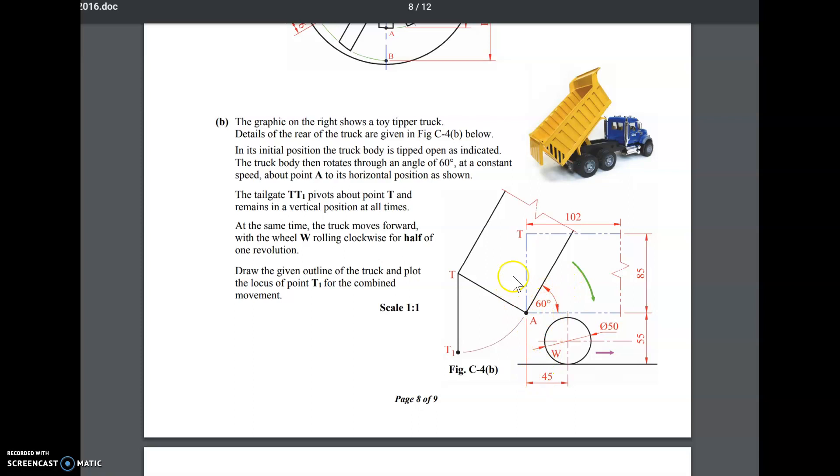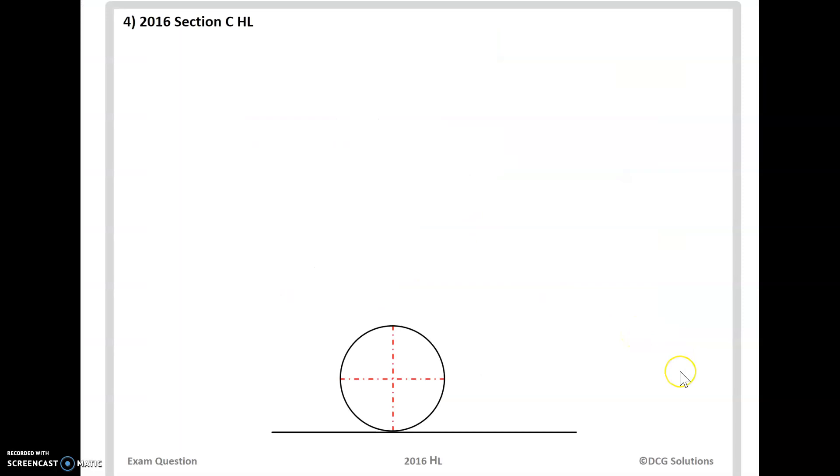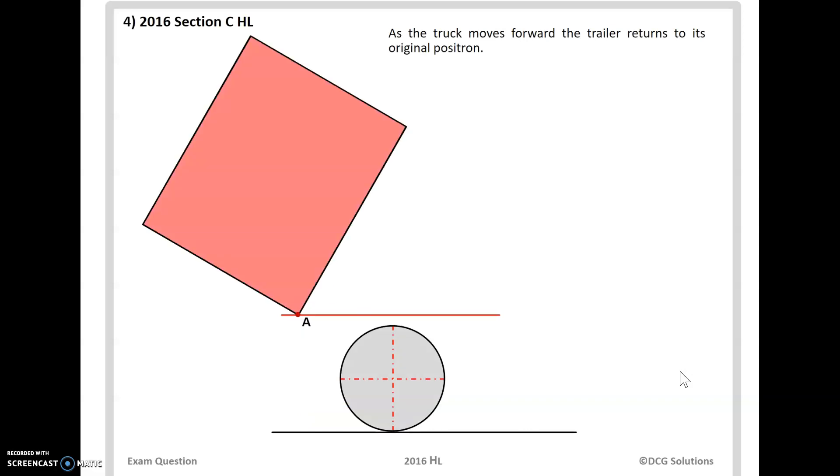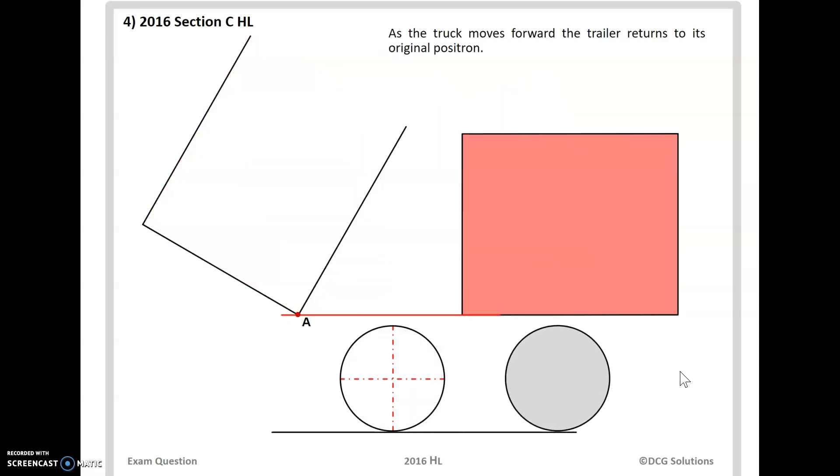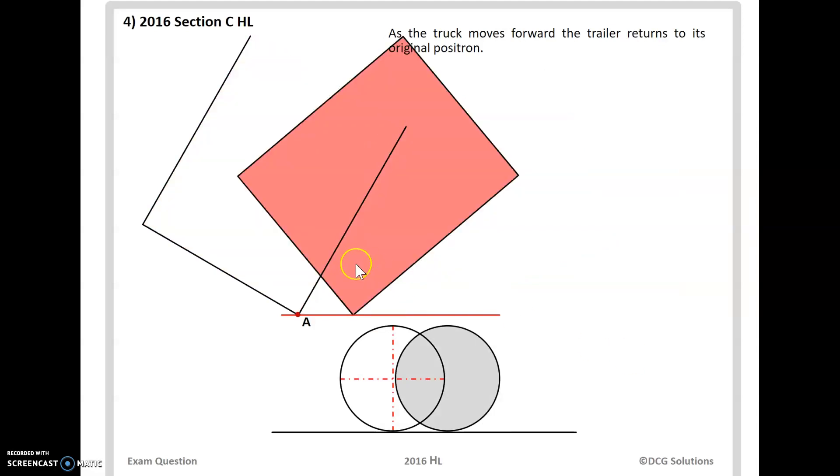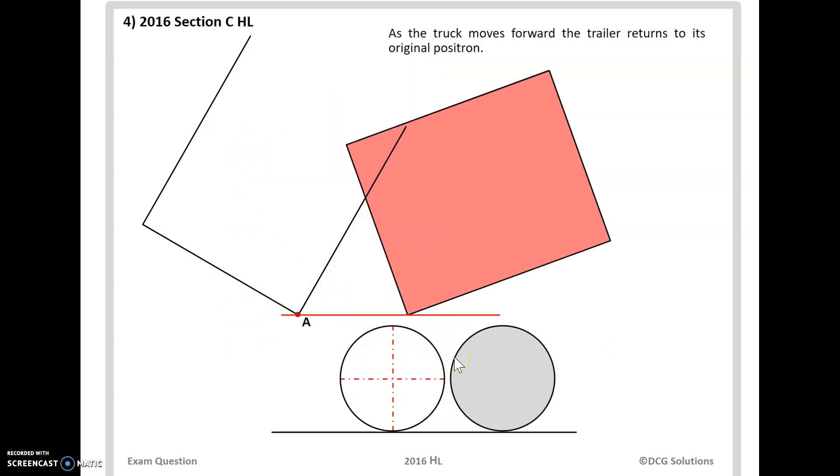Okay there's a couple of things we need to plot out. All right so the first thing we're going to draw a wheel and where we have the tipper truck. As the truck moves forward the trailer returns to its original position so the trailer is moving down like this as the truck moves forward. So what we're looking at is the movement of the line here, the movement of the wheel and where the tailgate is going to be.